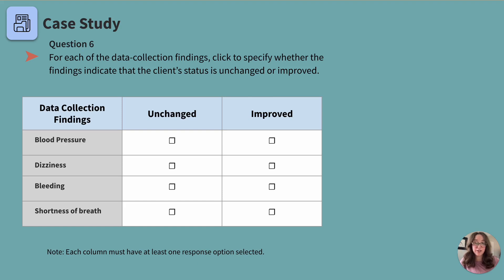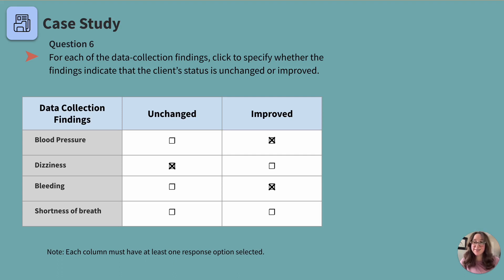Dizziness is unchanged because the nurses note states the client still reports some remaining dizziness. Bleeding has improved as it is noted to have slowed over the last half hour. Shortness of breath — the client reports no shortness of breath, so this has also improved. And that's all for our case study today. Thank you so much for completing this with me, and I'll see you next time!